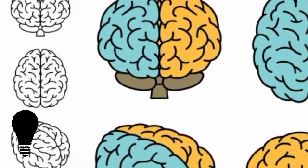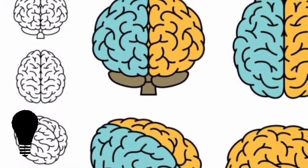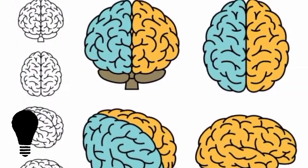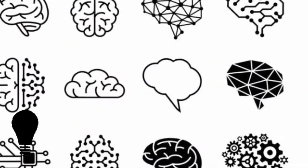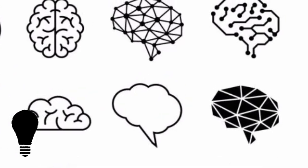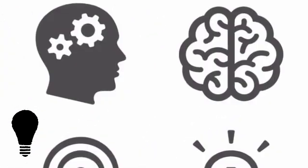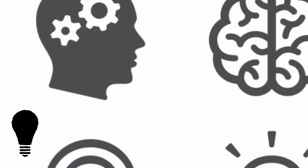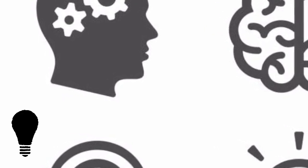You carry around a three-pound mass of wrinkly material in your head that controls every single thing you will ever do. From enabling you to think, learn, create, and feel emotions to controlling every blink, breath, and heartbeat, this fantastic control center is your brain.